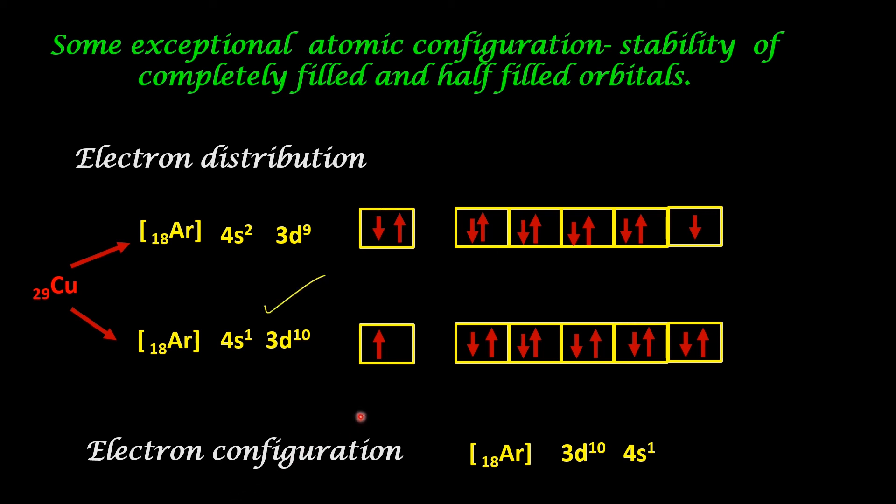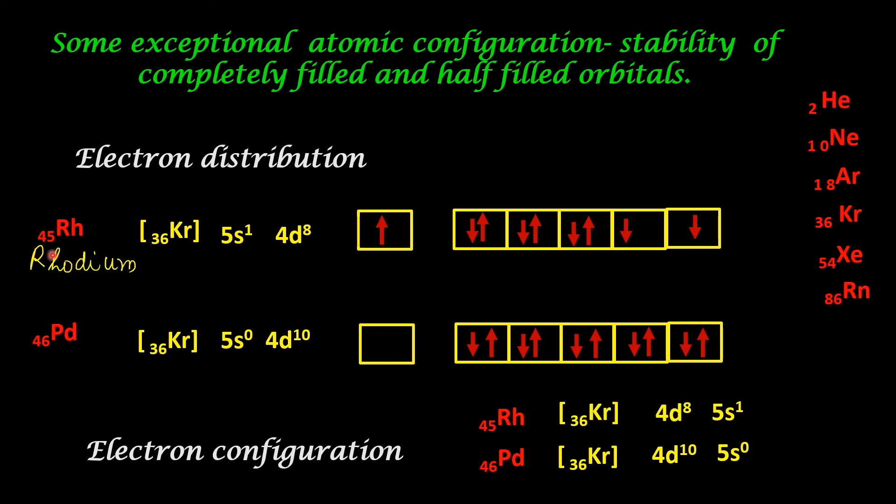The first option is not correct. Electron configuration has to be argon 18, 3d10, 4s1. Next one, rhodium, atomic number 45. This is palladium, atomic number 46. They differ only in one electron.